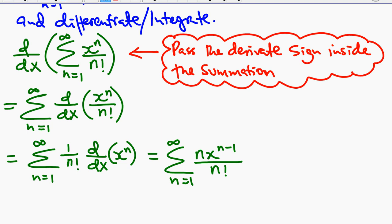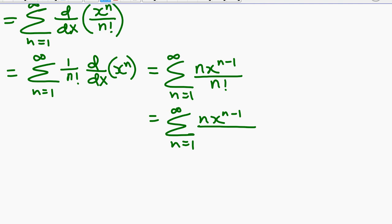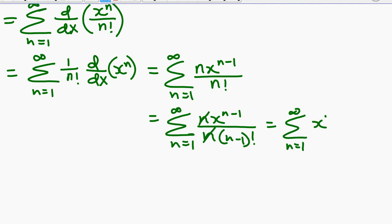Now, we can simplify this expression. We write the sum from n equals 1 to infinity of n·x^(n-1) over n factorial, and n factorial can be written as n multiplied by (n-1) factorial. So the n's cancel, and we end up with the sum from n equals 1 to infinity of x^(n-1) over (n-1) factorial.